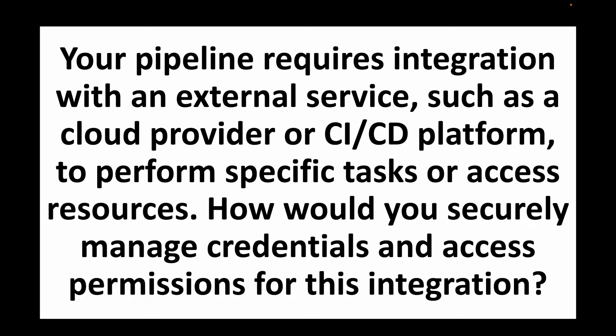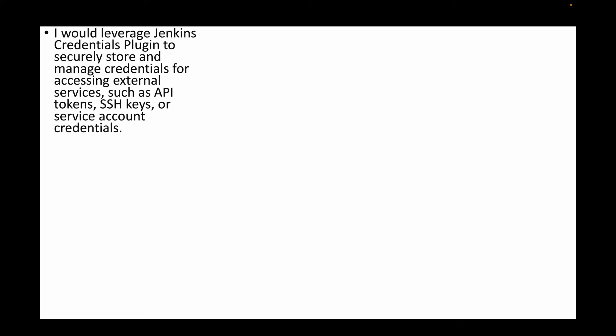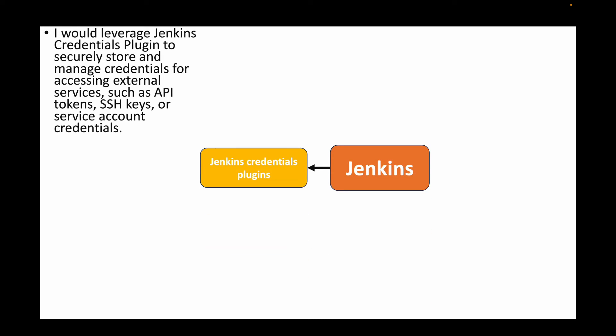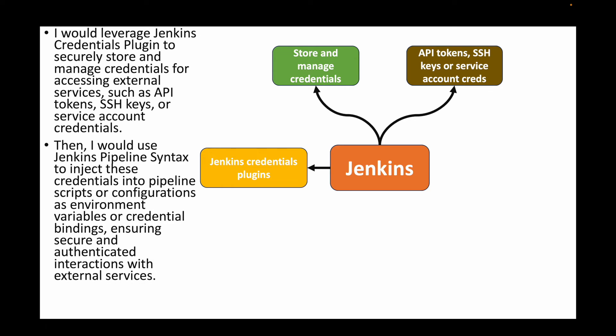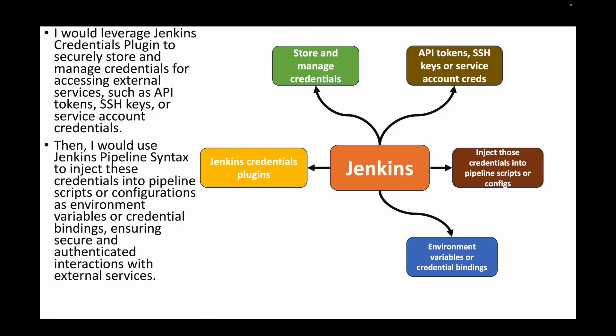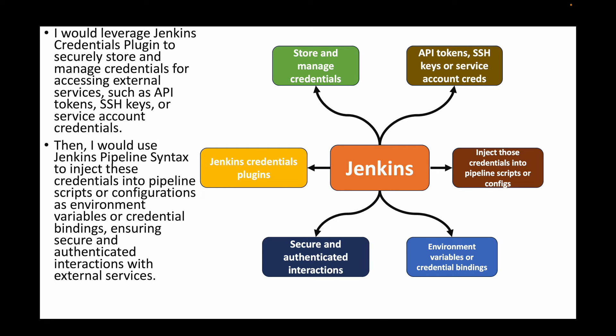The next question: your pipeline requires integration with an external service such as a cloud provider or CI/CD platform — how would you securely manage credentials and access permissions? Leverage the credentials plugin to securely store sensitive data such as API tokens, SSH keys, or service account credentials. Then use the Jenkins pipeline syntax to inject these credentials into pipeline scripts or configurations using environment variables or credentials binding, ensuring secure and authenticated interactions with external services.